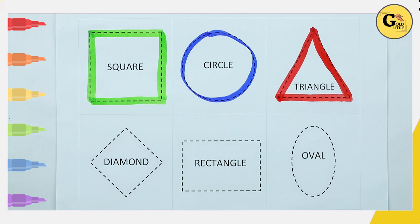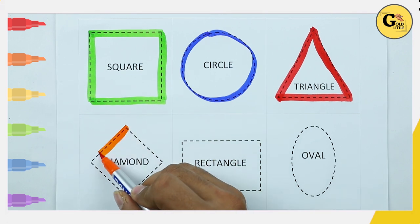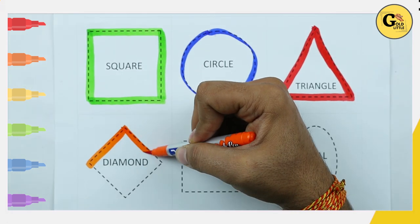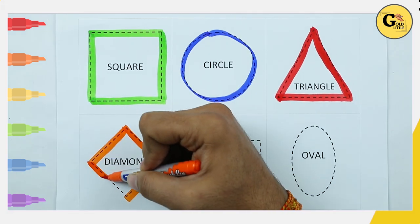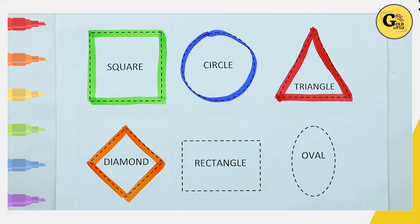It's a triangle with red color. One sliding line, two sliding line, three sliding line, four sliding line. It's a diamond. Orange color. Diamond.